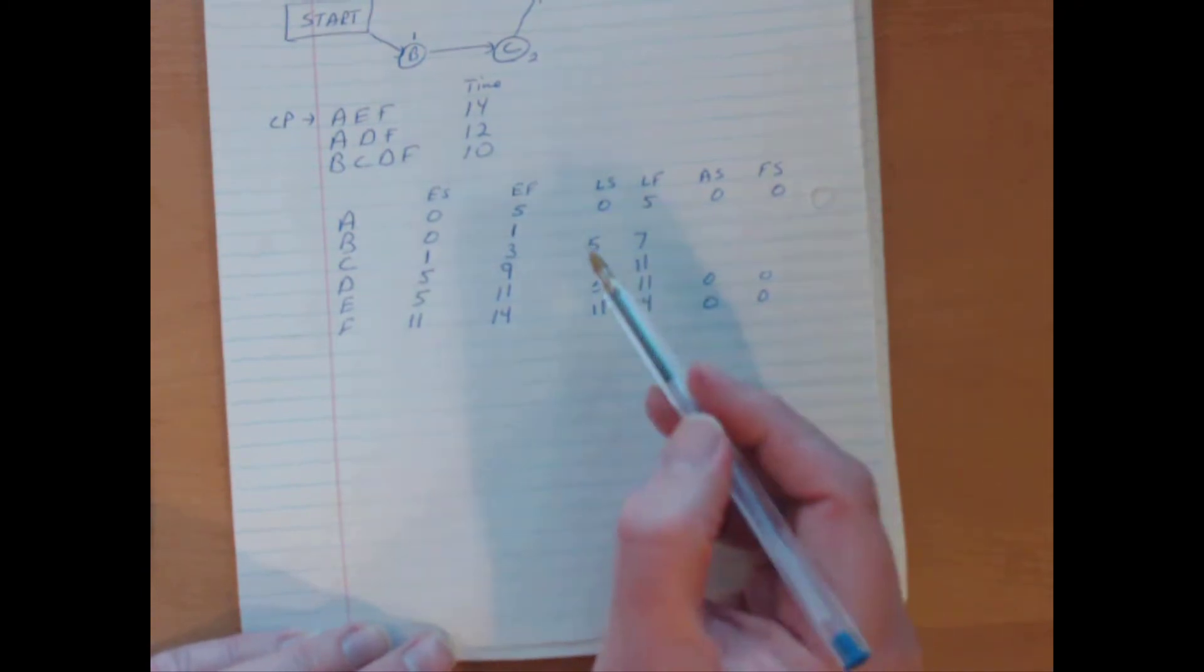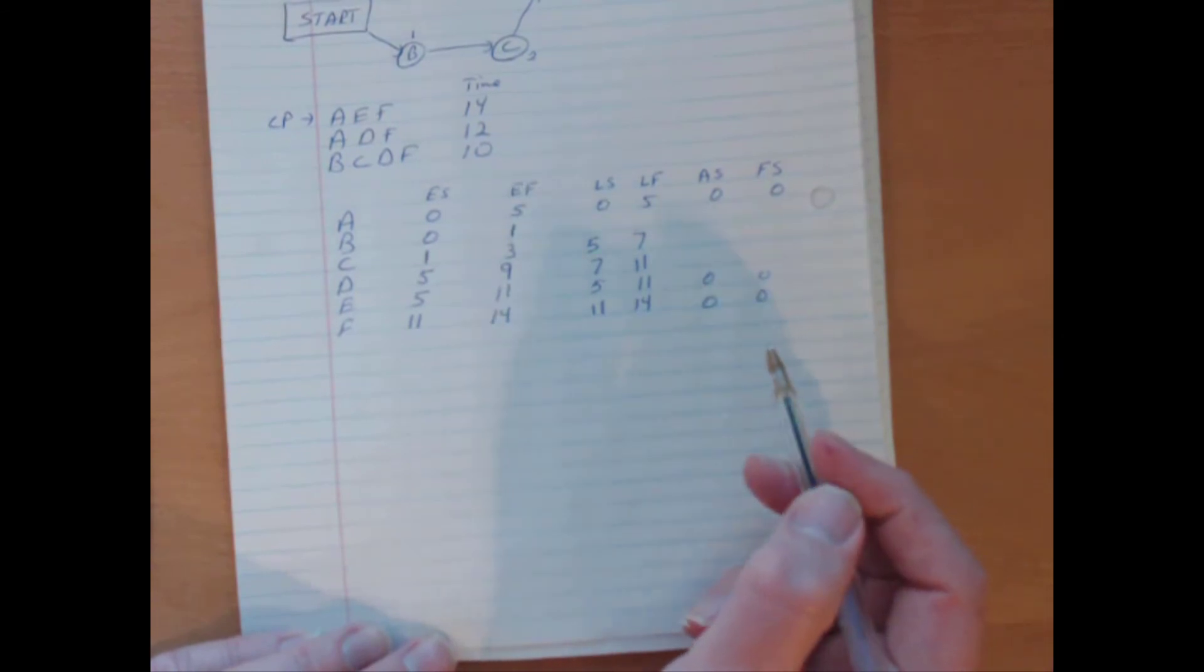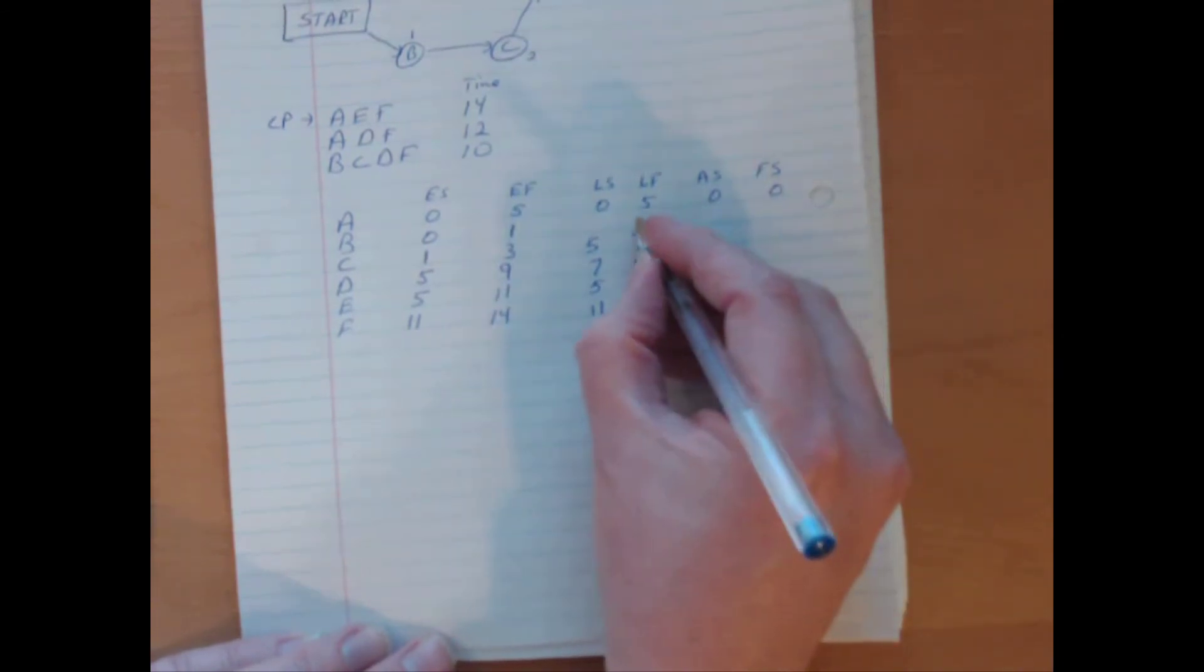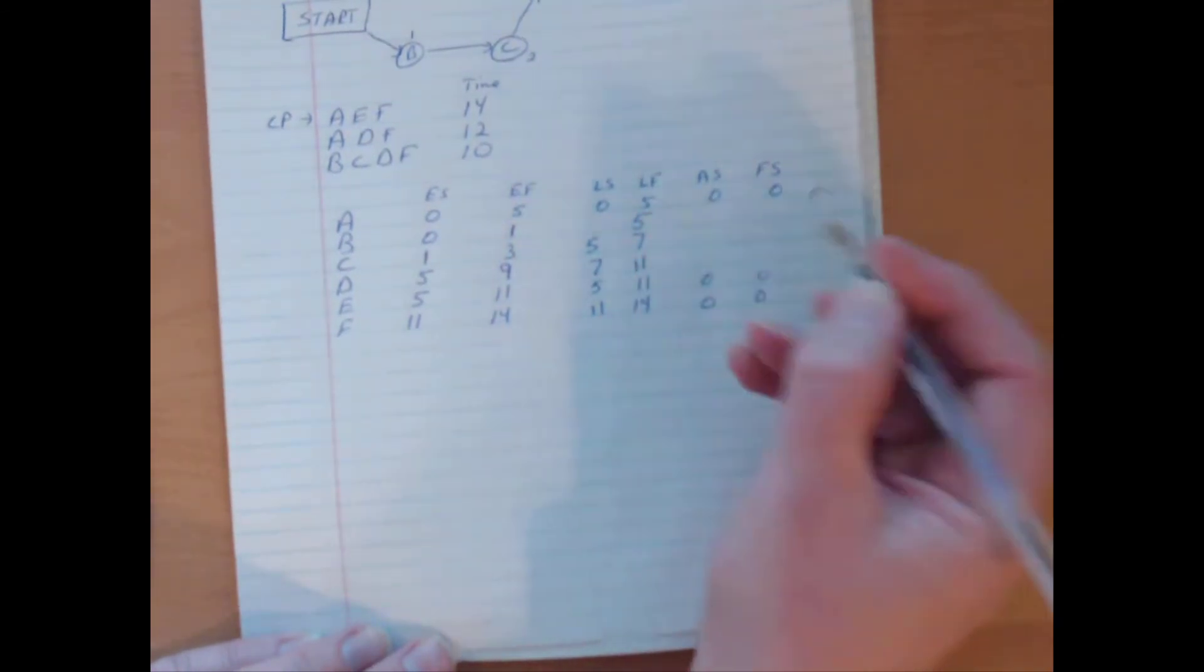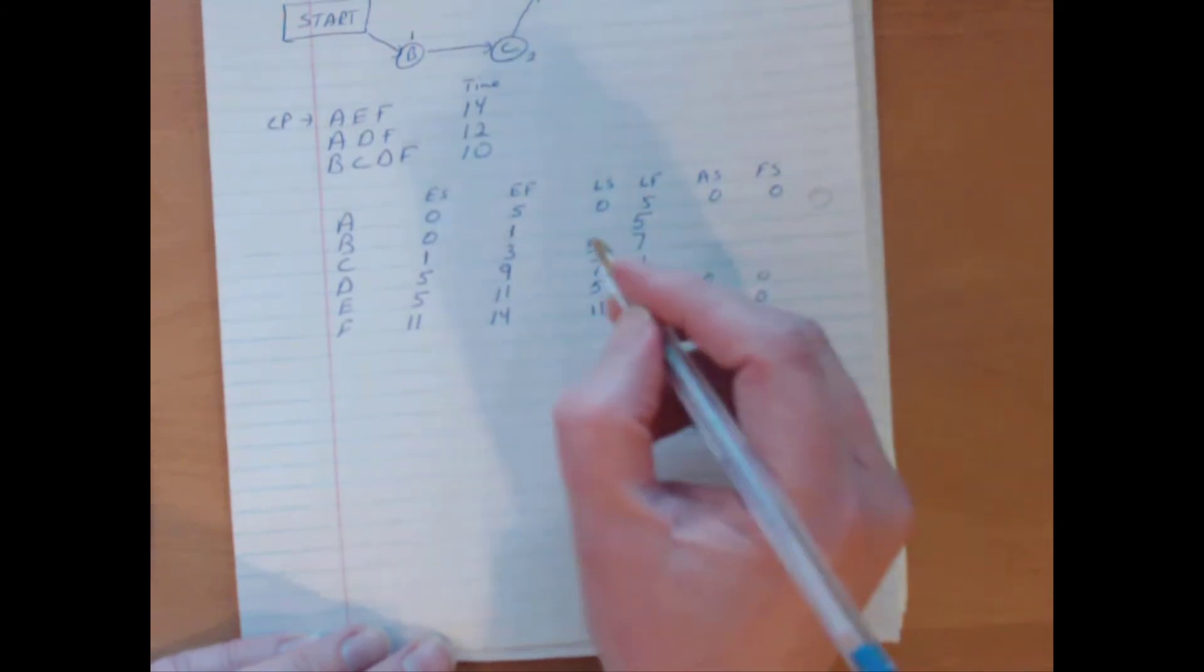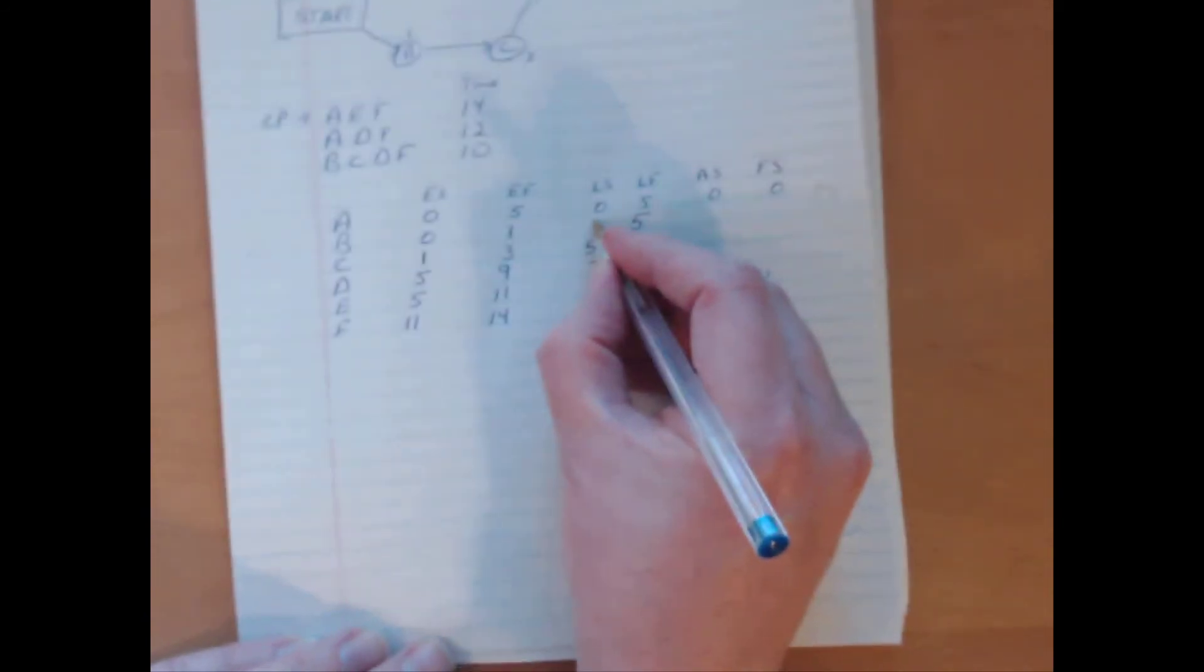And then lastly, we go into period B. C depends on B. C can't start any later than period 5, which means that B has to finish by period 5. And then B takes one period, and so B has to start no later than period 4.